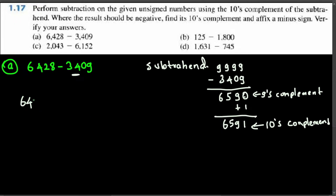So we have 6428 and we add the tens complement of the subtrahend, which is 6591. We get: 8 plus 1 is 9, then 2 plus 9 is 11 — write 1 carry 1, then 4 plus 5 plus 1 is 10 — write 0 carry 1, then 6 plus 6 plus 1 is 13 — write 3 carry 1. So we get 1, 3, 0, 1, 9.